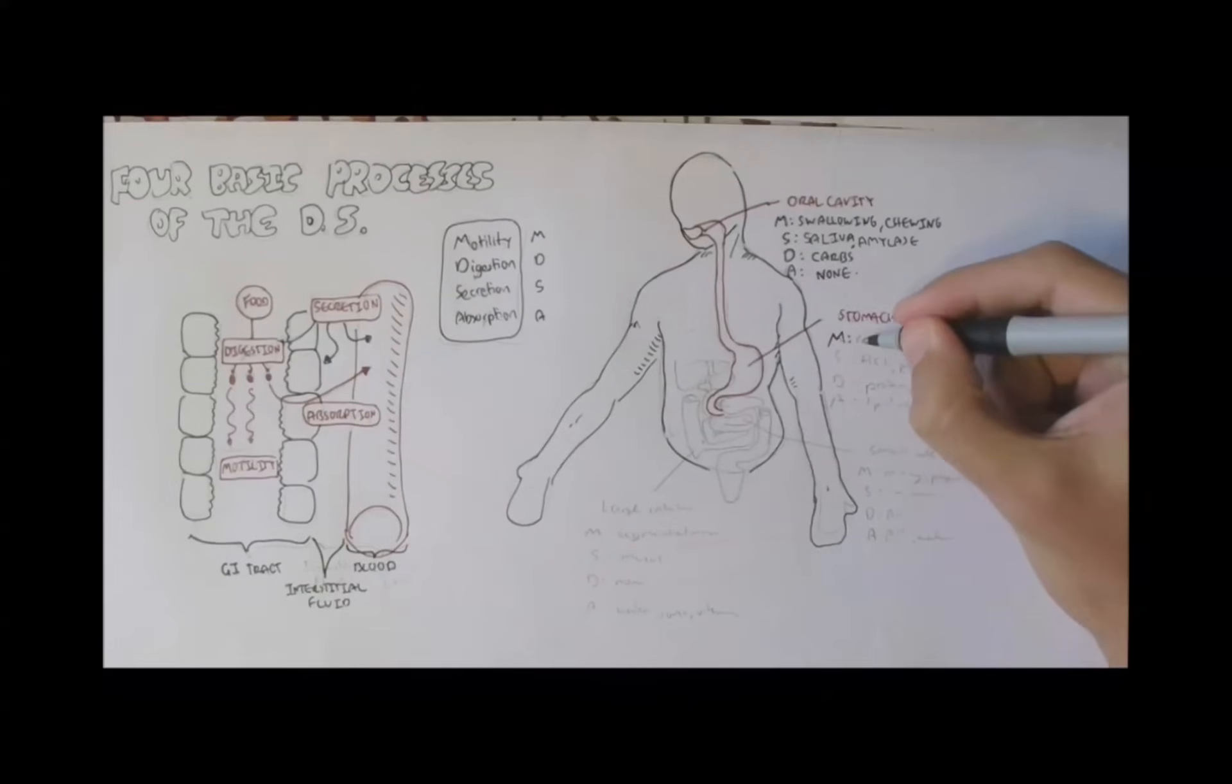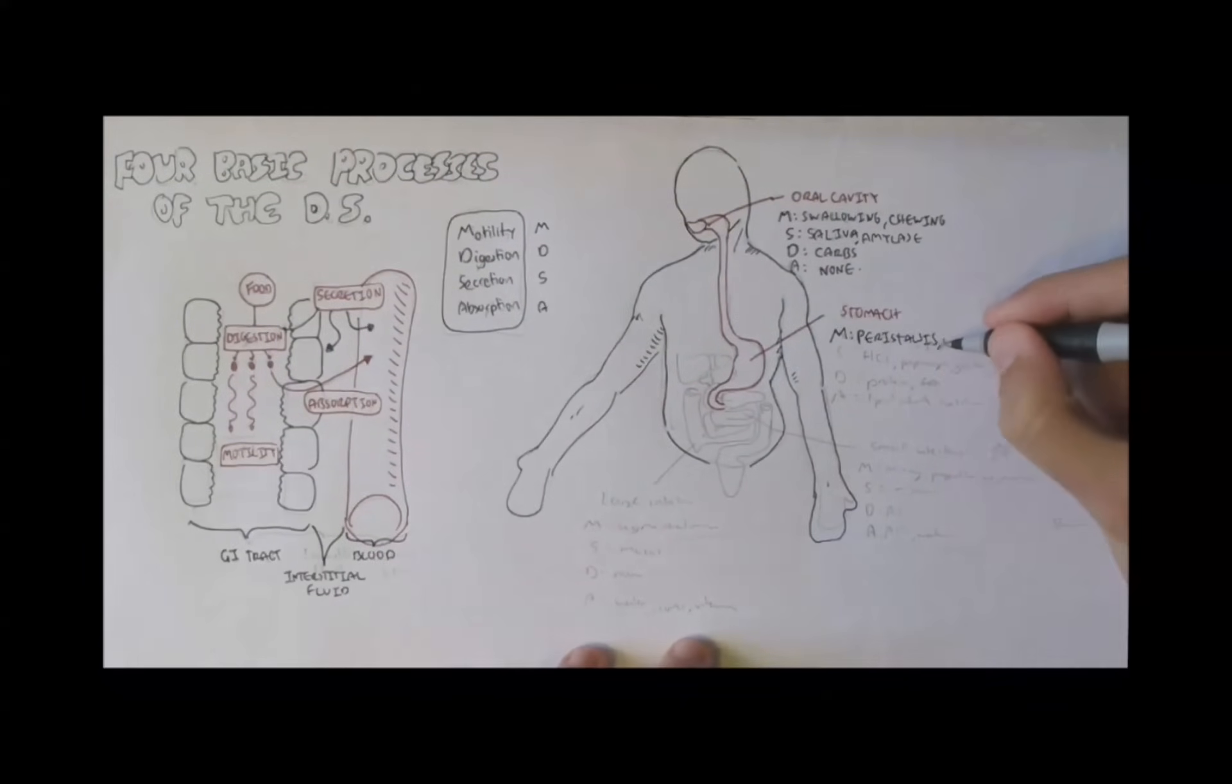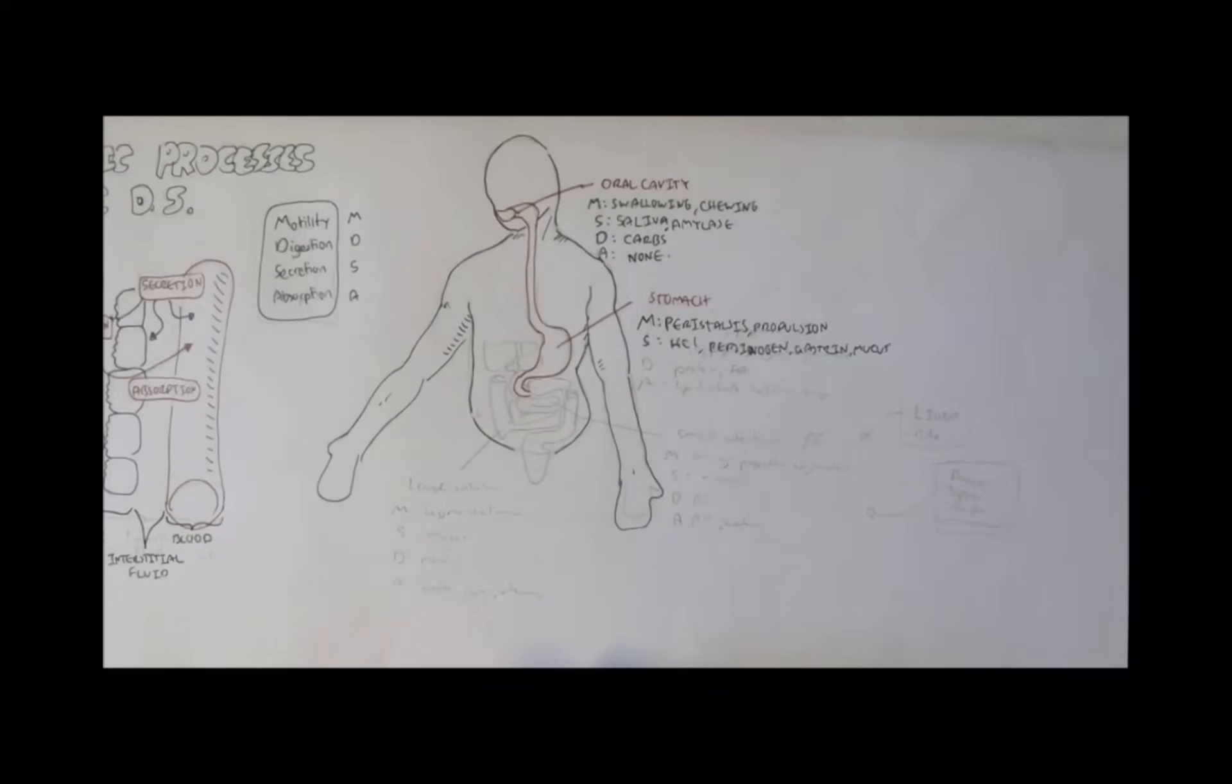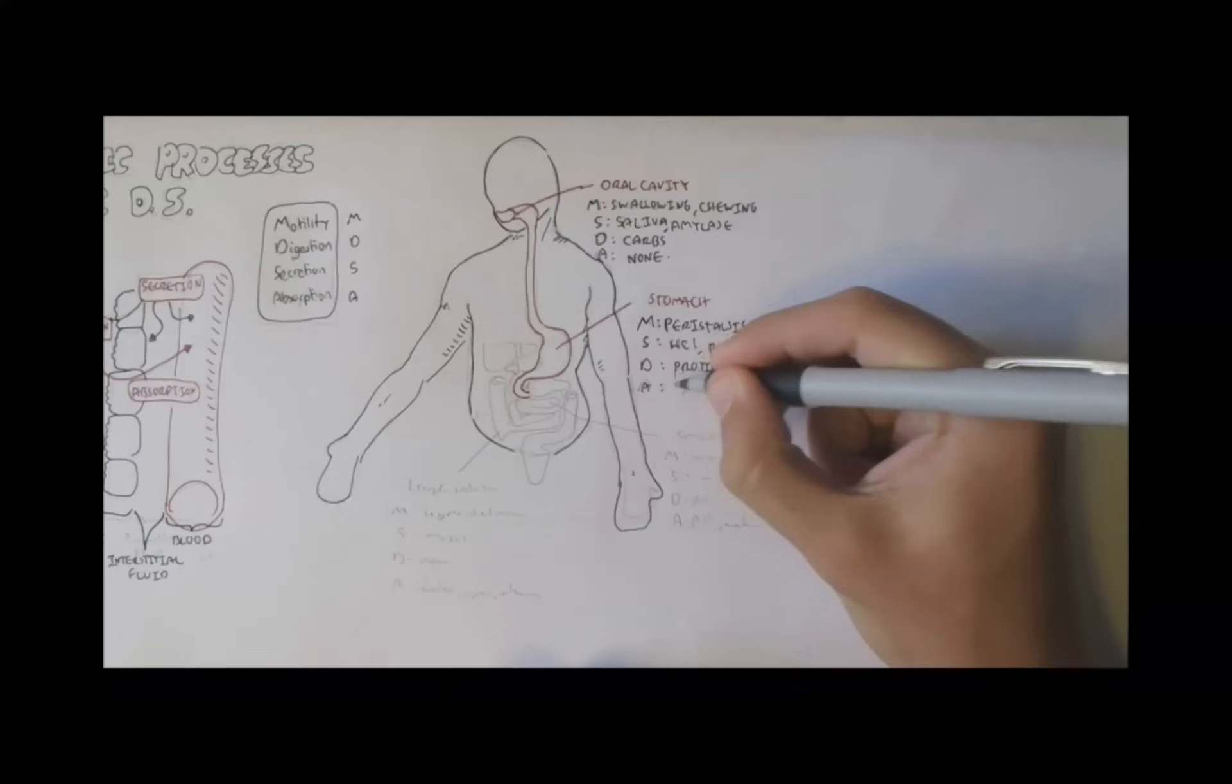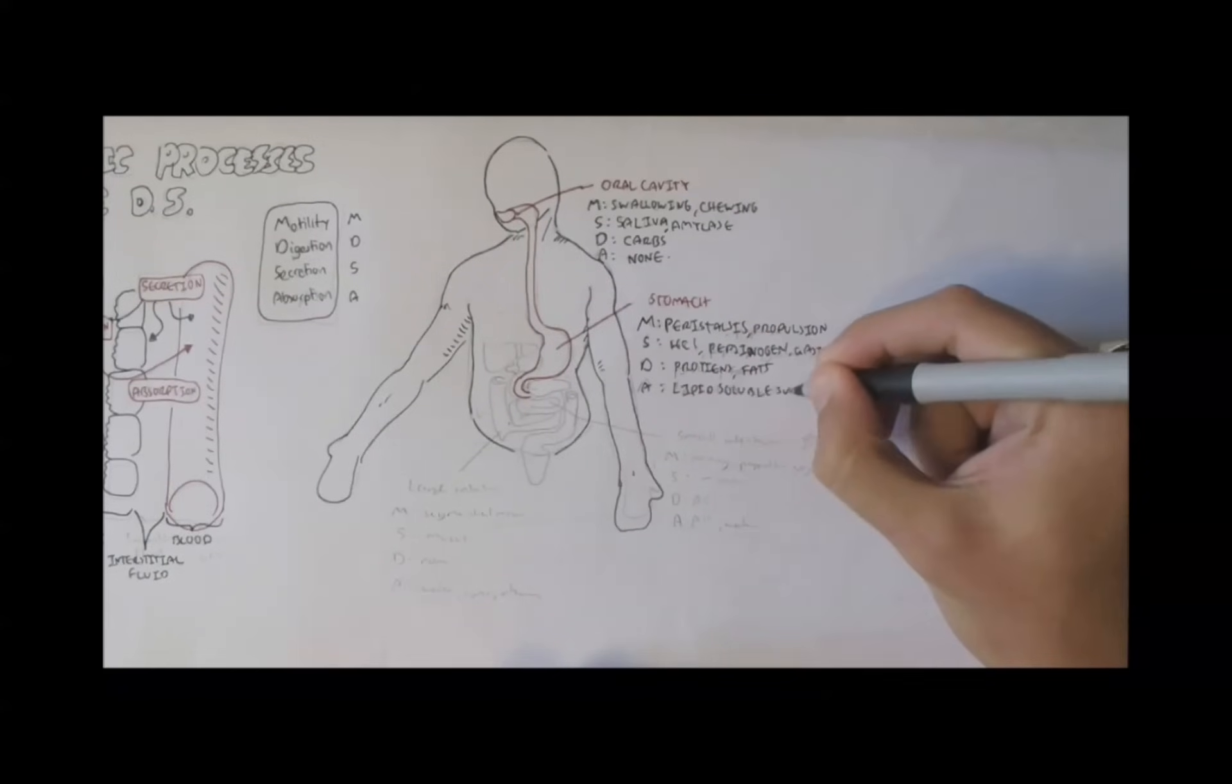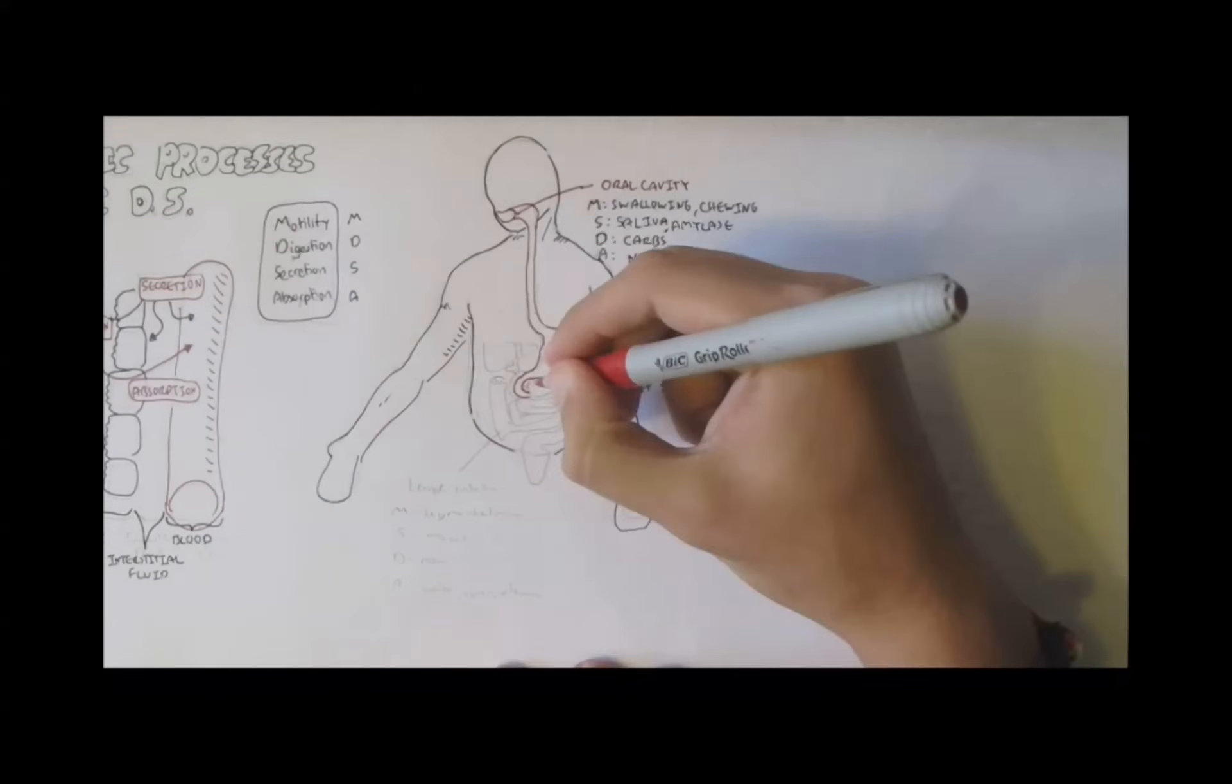The stomach: the motility is peristalsis, and also propulsion and mixing. Secretion, it will secrete hydrochloric acid, pepsinogen, gastrin, mucus, and some more other stuff which we will look into further. It will digest proteins and a bit of fat. Absorption, it will absorb lipid soluble substances such as aspirin.